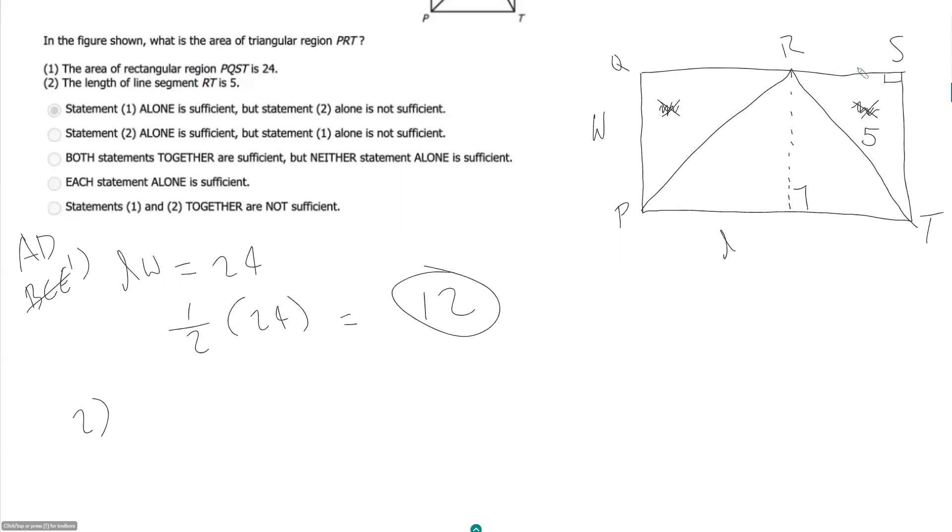We don't know if we have special triangles here or anything like that. So I think maybe this is intended to be combined with the first statement so that people will select C as a trap answer. I think this is just insufficient. So we're left with just A.